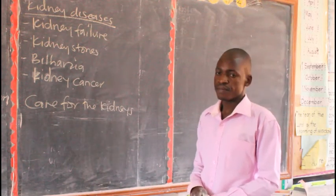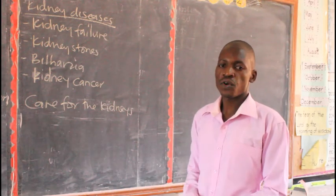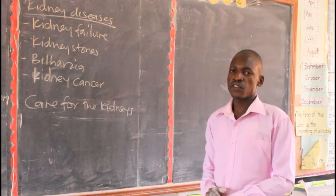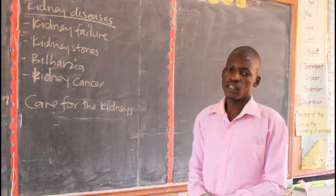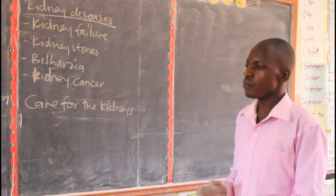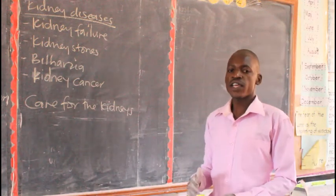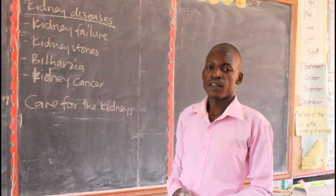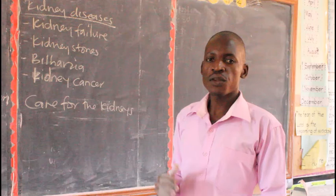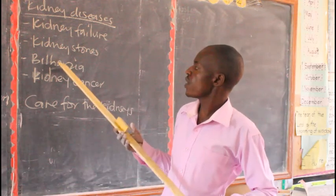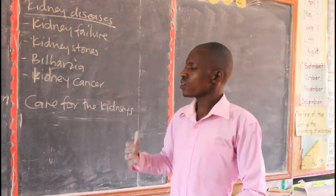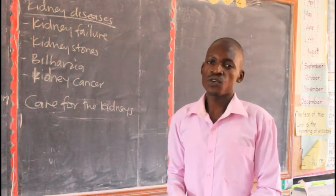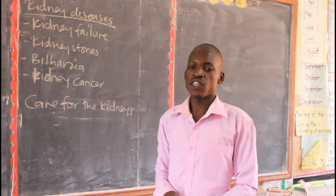How can we care for our kidneys? One, have regular physical exercise — just like any other body organ, the kidney needs you to have physical exercise. Two, avoid eating too much salt, as this affects the kidney. Three, drink enough water — take plenty of water, as the kidney works best when there is enough water in the body. Four, drink boiled water. Remember that the kidney can be affected by bilharzia, which is spread through contaminated water. When you boil water, you are killing the bilharzia germs.